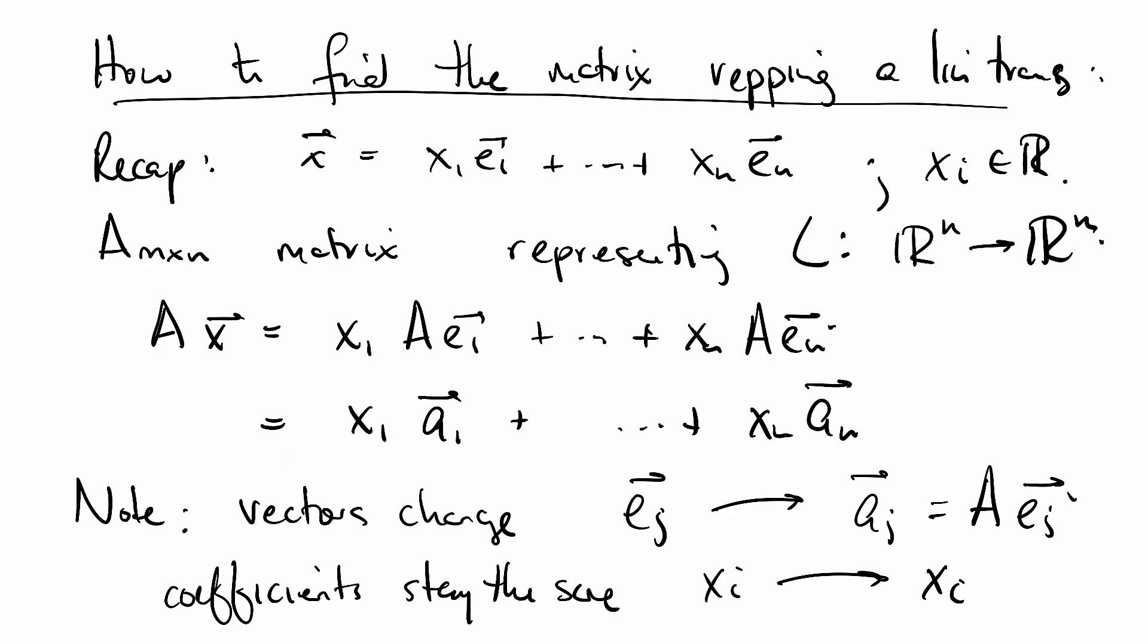What does this tell us? It tells us that in order to find A, which is made up of the A_j's, all we need to do is find how A, or the linear transformation, affects the standard basis.